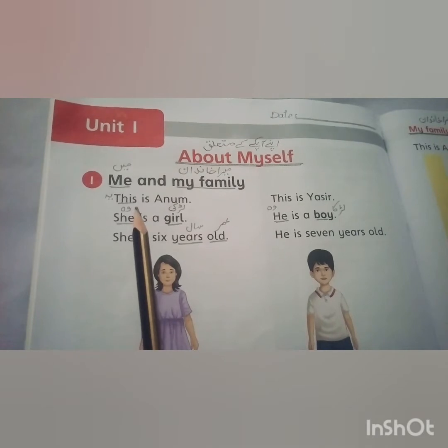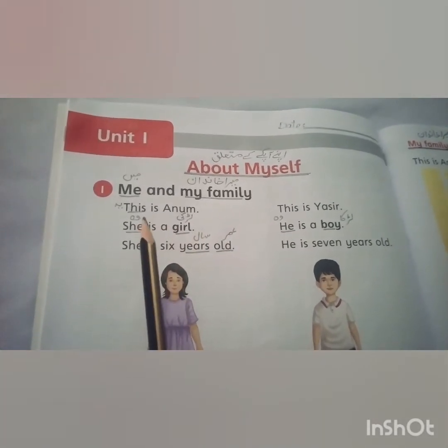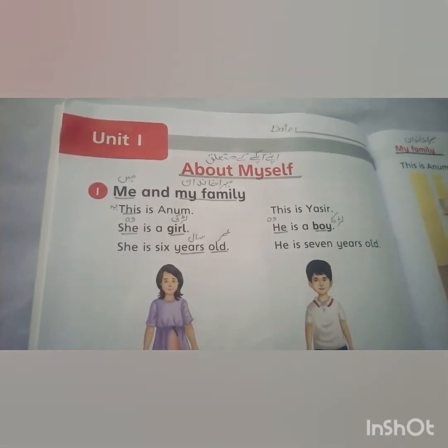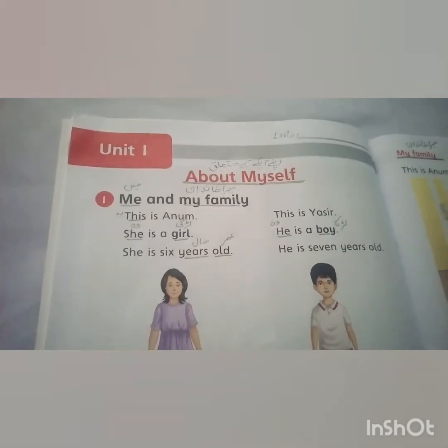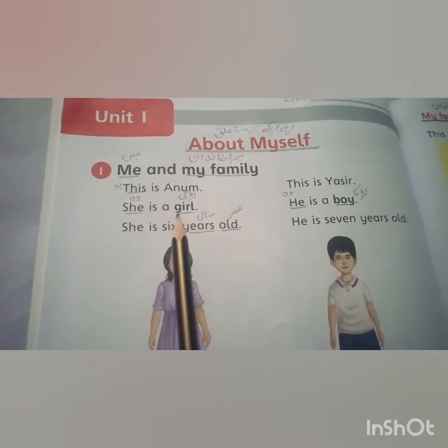یہاں پہ دو بچے ہیں۔ وہ پہلے اپنے آپ کے بارے میں introduction دے رہی ہیں پھر اس کے بعد آگے وہ اپنی family کے بارے میں کہیں گے۔ This is Anam. یہ Anam ہے۔ She is a girl — وہ ایک لڑکی ہے۔